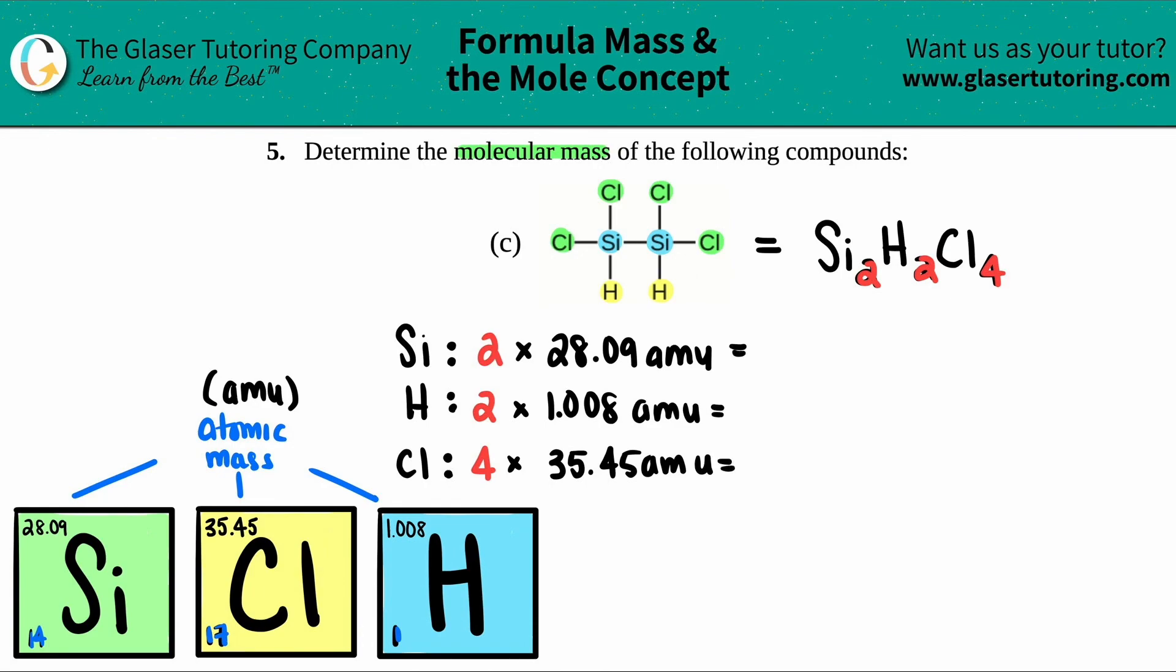So let's go for it. Silicon: two times 28.09, I get 56.18 amu. That's the total amount of silicon in my compound. Two times 1.008, I get 2.016 amu. And then chlorine, four times 35.45: 141.8 amu.